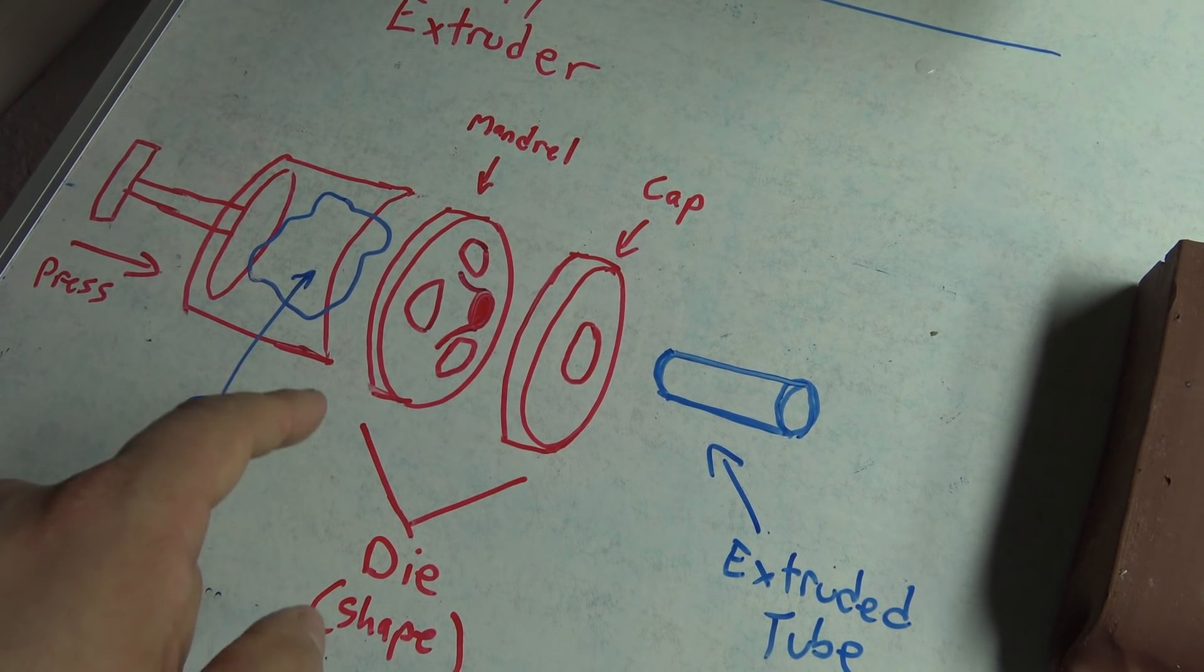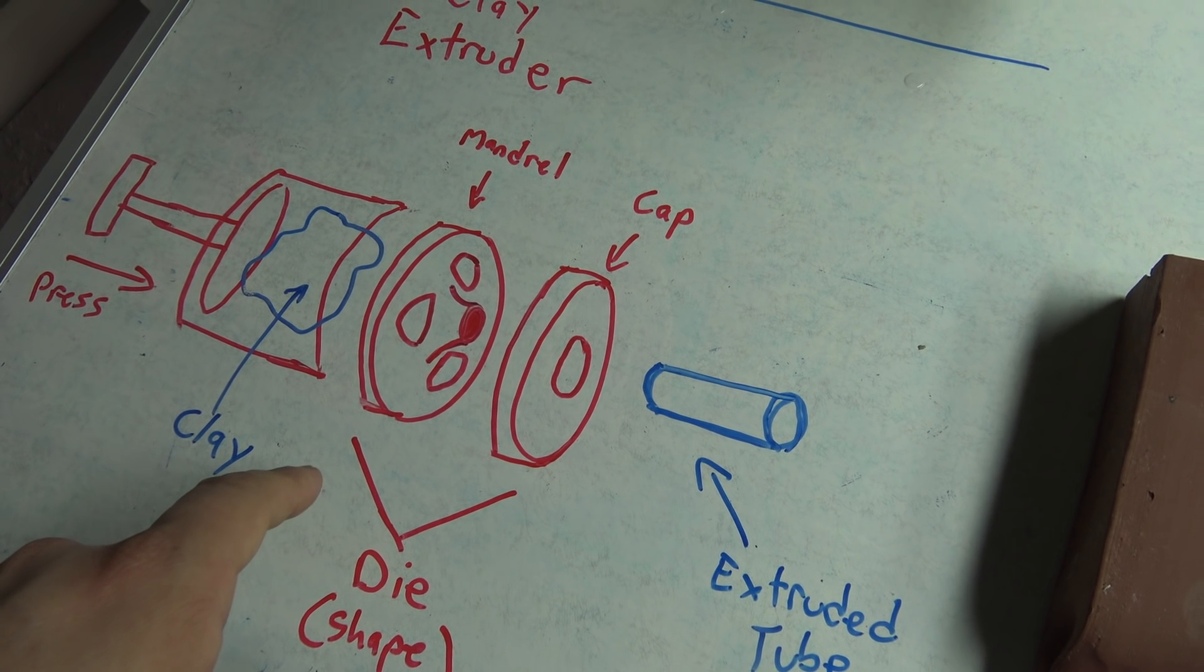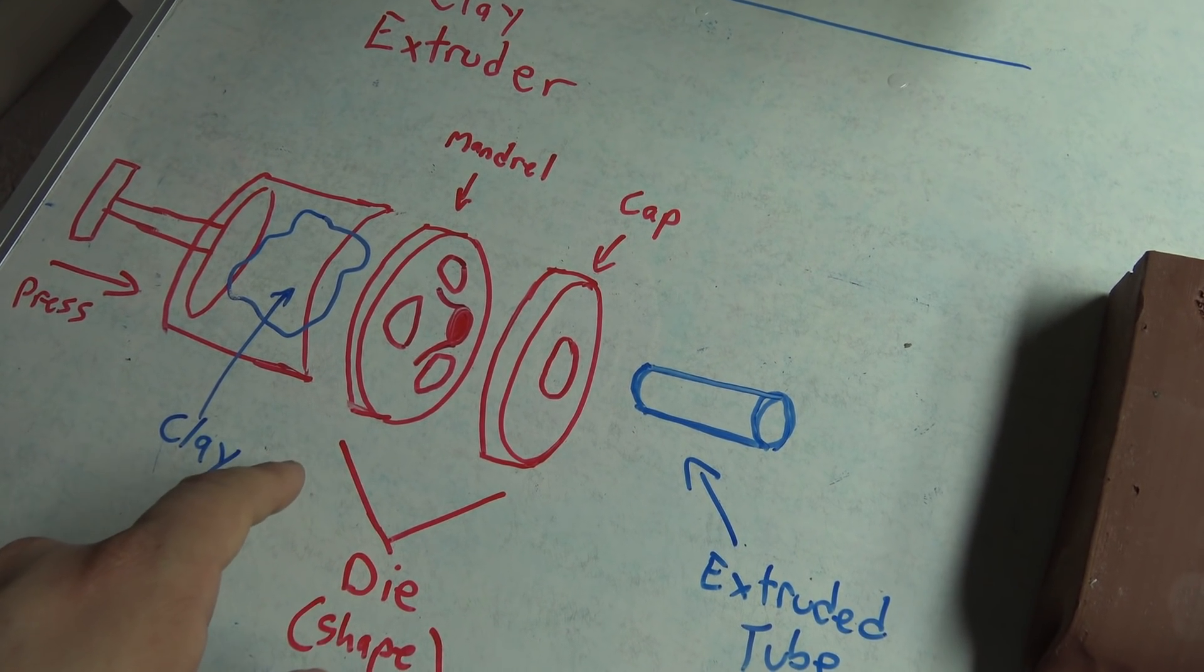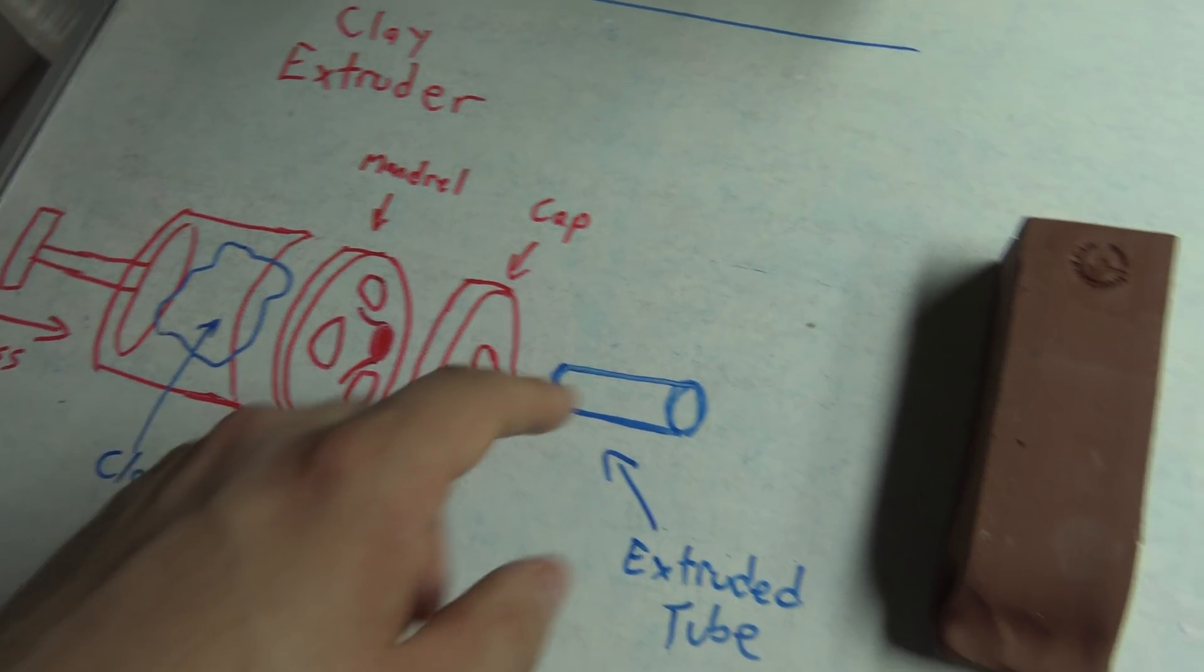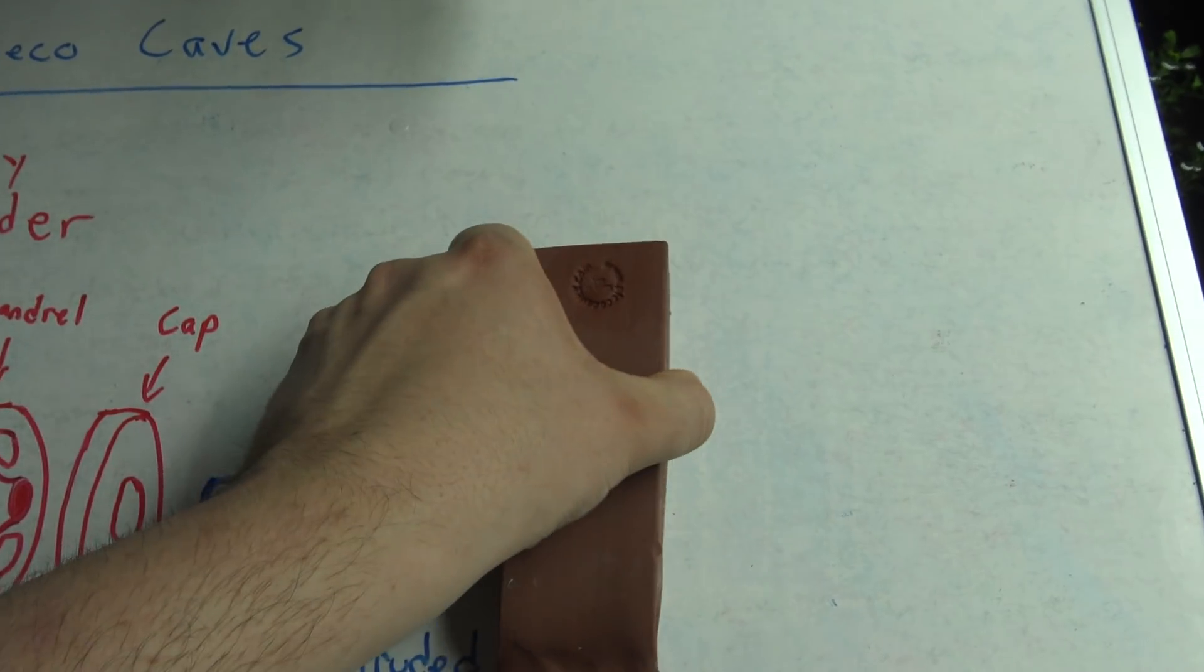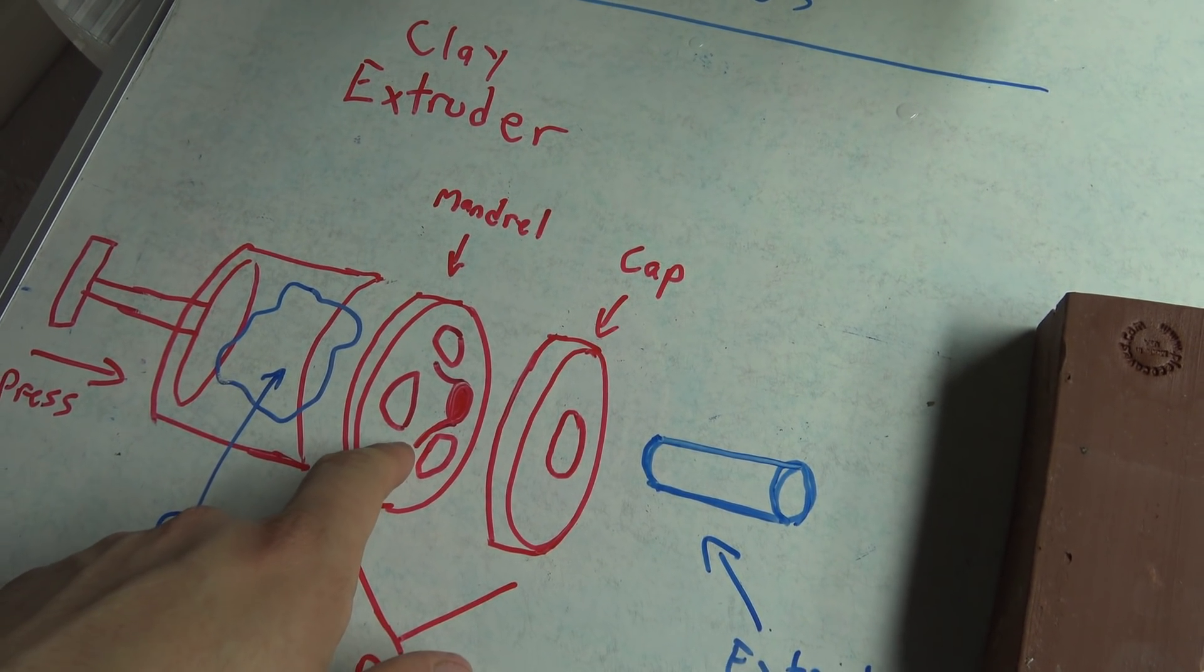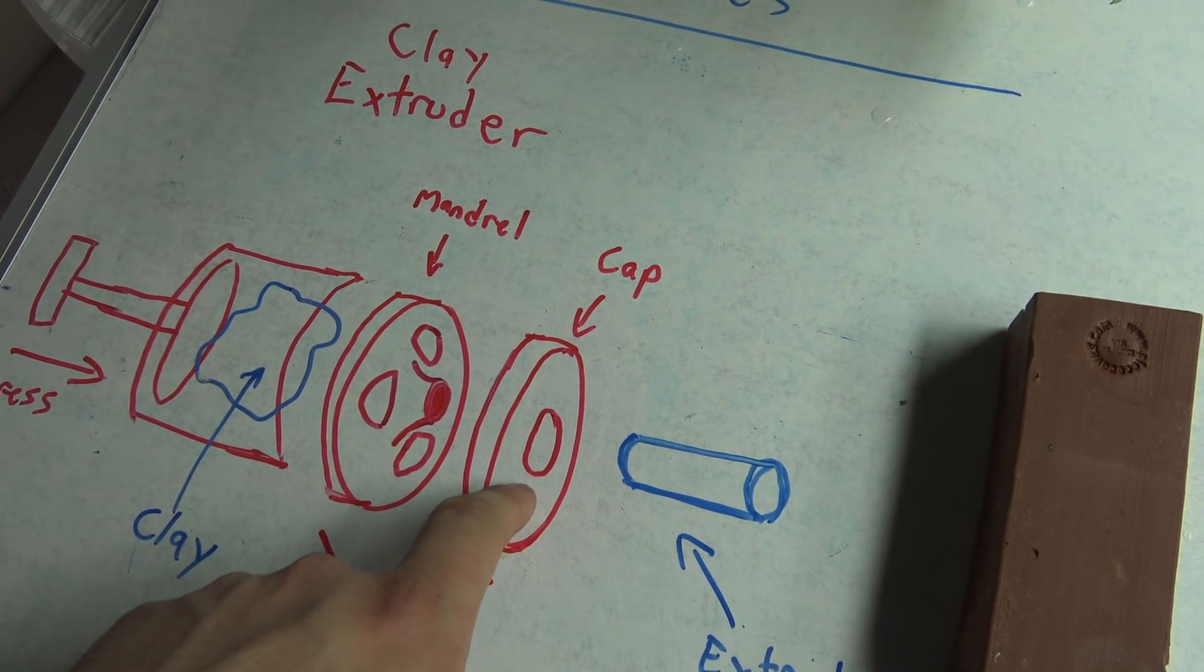And that's what's going to give you your shape. Now, if you're doing a very simple shape, then you can get by with a one-part die. But because we have a hollow inside, we actually need a two-part die. And it consists of one thing that's called a mandrel and another thing called a cap.